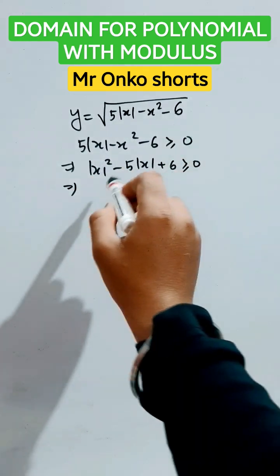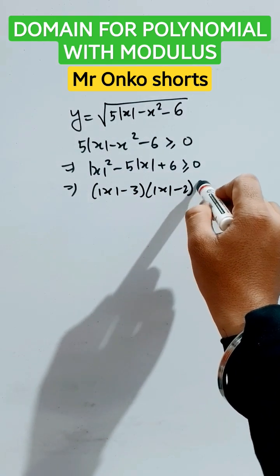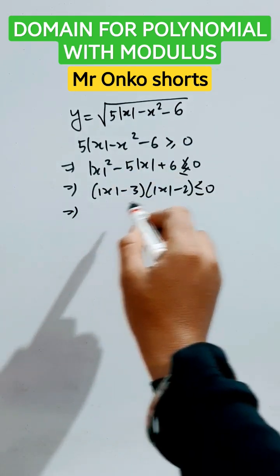This is greater than or equal to 0. If you factorize this, you will get |x - 3| times |x - 2| that is less than or equal to 0, because the sign is taken negative.